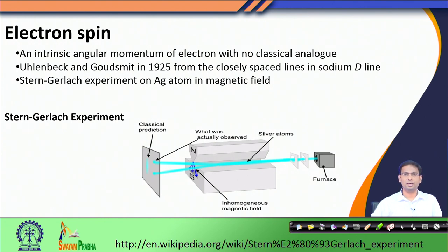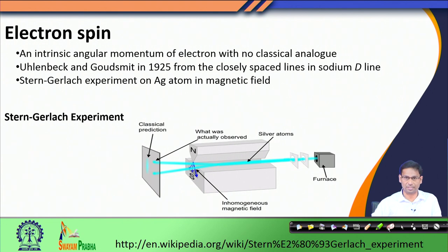This spin is inherent to the nature of the electron; you cannot separate spin from an electron. If there is an electron, the electron has its spin, so spin is always present. Therefore, there is a flaw in the discussion that we had, and we would try to correct it to some extent in today's class.